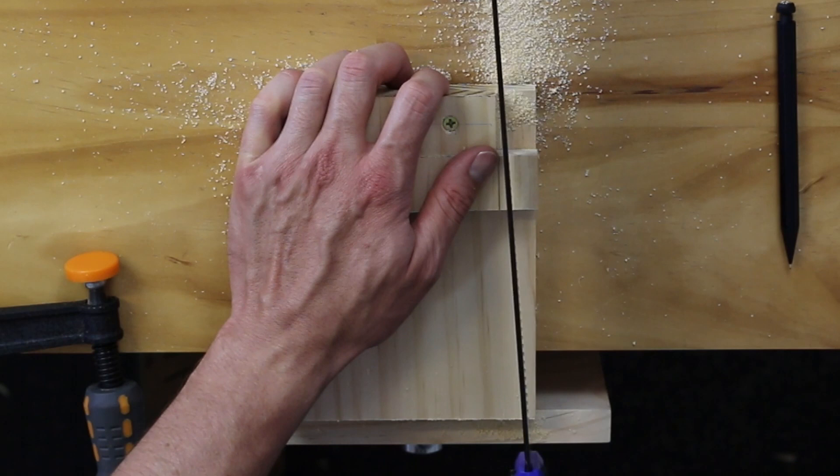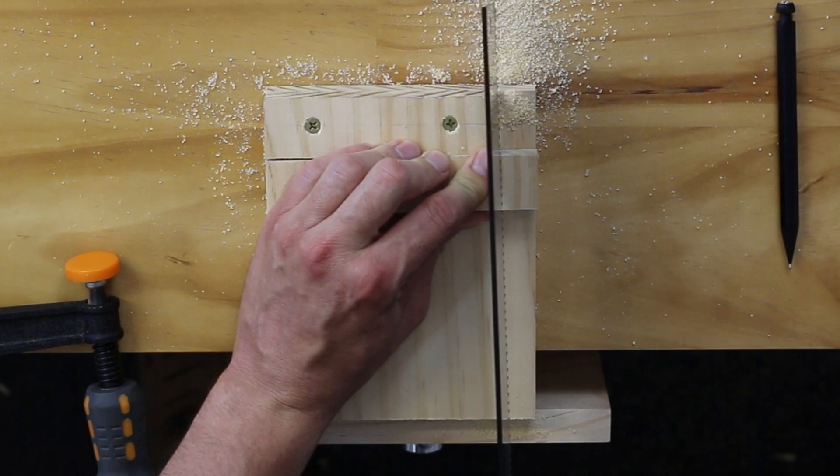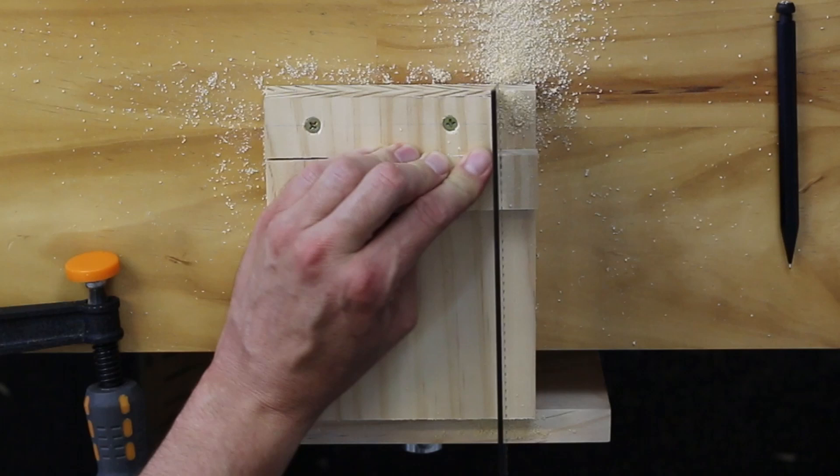Because you're using your thumb to hold your timber in place, you will use your forefinger to lean up against the saw blade. Pull back your saw three times and then cut the whole way through your timber.